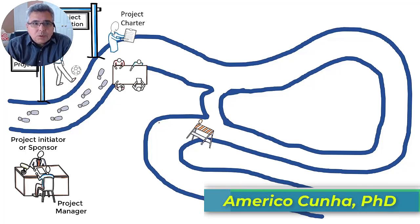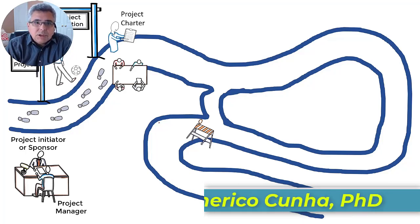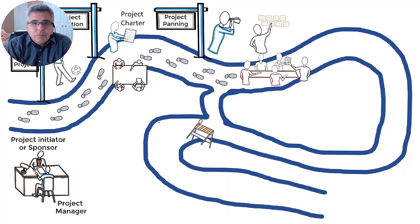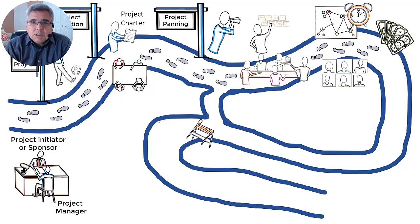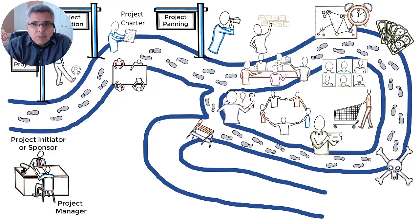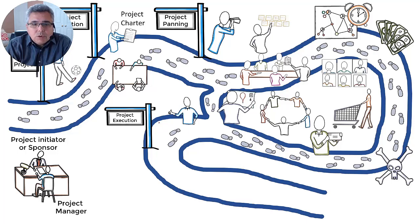When we start a project, we have the pre-project phase, then we move from project initiation, in which we have the project charter, then we move to project planning. First we do the WBS, then the scheduling, budget, human resource, then we move for procurement, risk assessment, communication, integration. We prepare the project plan, and once the project plan is approved, we move forward to the execution.